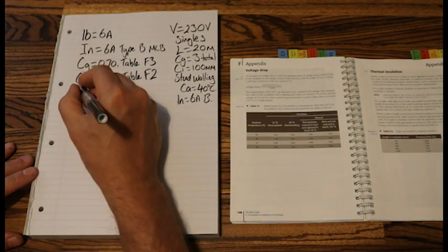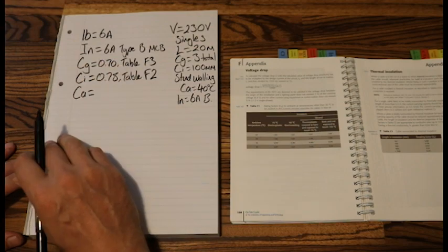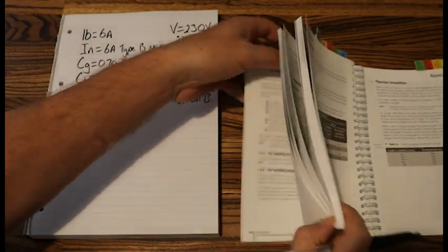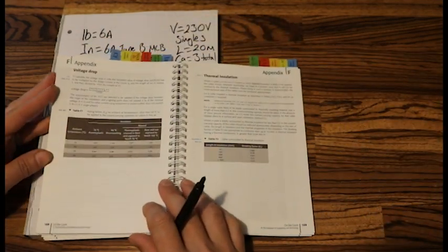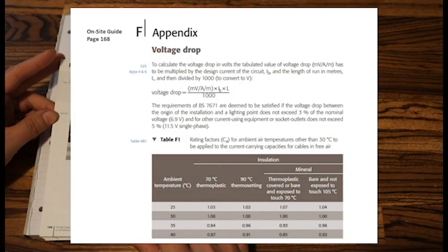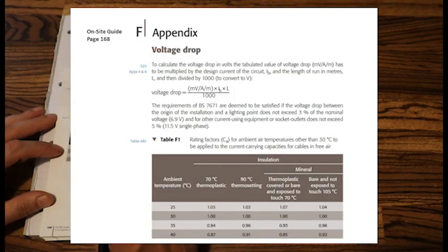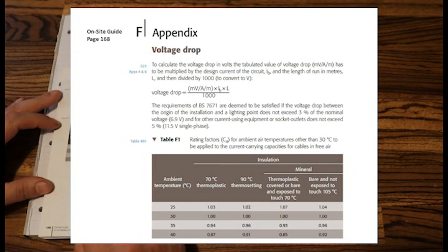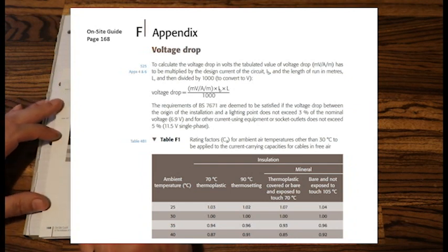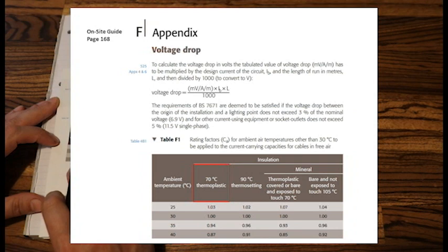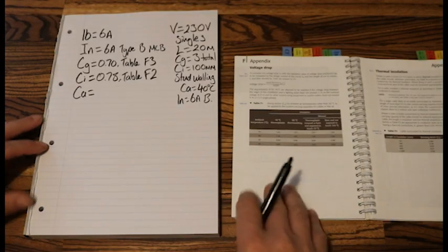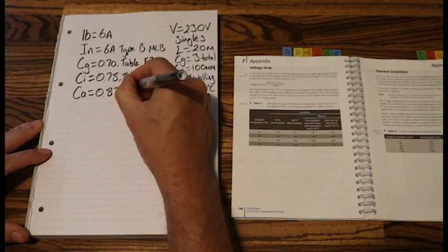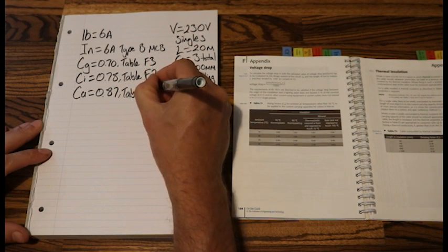And then we come to CA. Back to the book. That is table F1, page 168. Now our question said that it's going to be running single core cables. It didn't tell us anything about whether it would be thermoplastic or thermosetting. If the question does this, always assume that we'll be using thermoplastic cable. That is a standard cable. Our question says 40 degrees C. So the CA factor is 0.87. Table F1.